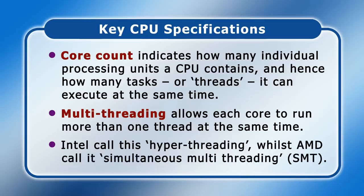Intel's multi-threading technology is called hyper-threading, whilst AMD's is known as simultaneous multi-threading or SMT. Usually, multi-threading doubles the thread count so that, for example, a quad-core processor can execute eight threads simultaneously. However, processors with four-way multi-threading have been produced to allow each core to run four threads at the same time.